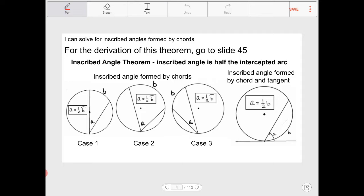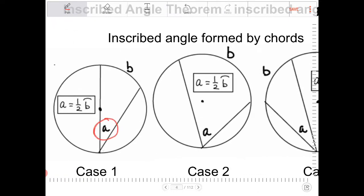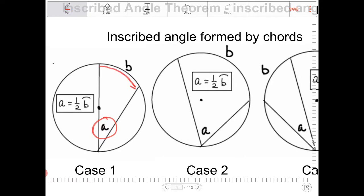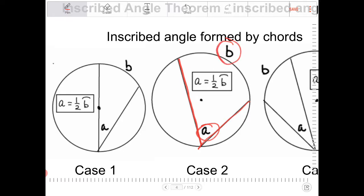Here are the relationships. Even though we have four different diagrams, they're all really talking about the same thing. The inscribed angle is actually going to be half of the intercepted arc. In case one, the inscribed angle is formed by a diameter and another chord. In case two, we have two chords that are not diameters, yet the same relationship holds — the inscribed angle is half of the intercepted arc.